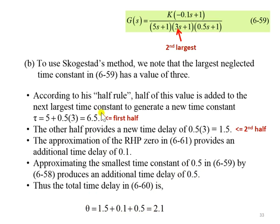Therefore, we have 6.5 time constant and 2.1 time delay by using Skogestad approximation.